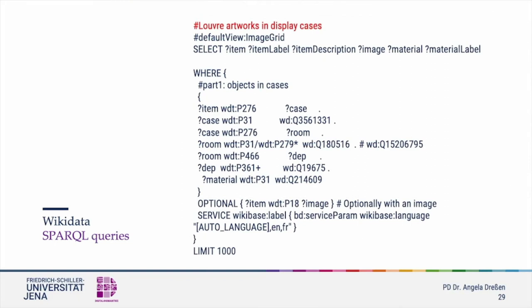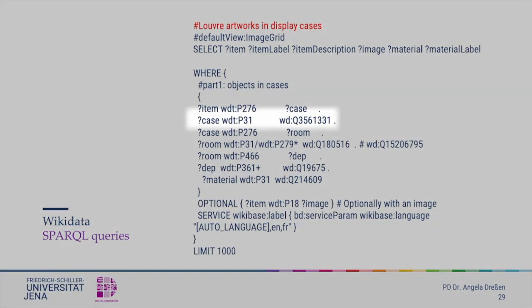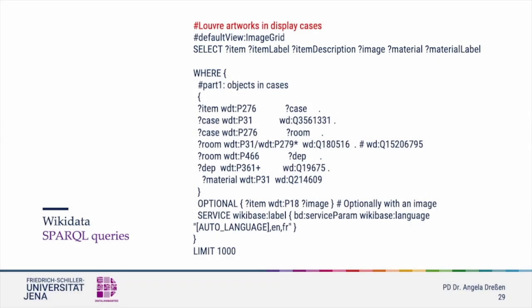You may notice immediately that this query does not have prefixes. This is because Wikidata queries usually use their internal data schema. WD is the code for subject and object, and WDT is for the predicate in the query. The SELECT line lists the entries of the tabular search results. Item will return a code for the item; item label will also give you the name of the item, as some queries only return the code. The first triple of the query involves an item, the Wikidata code for location P276, and the question regarding the museum case. The next line says the case is an instance of a vitrine, followed by the case having a location in a room.